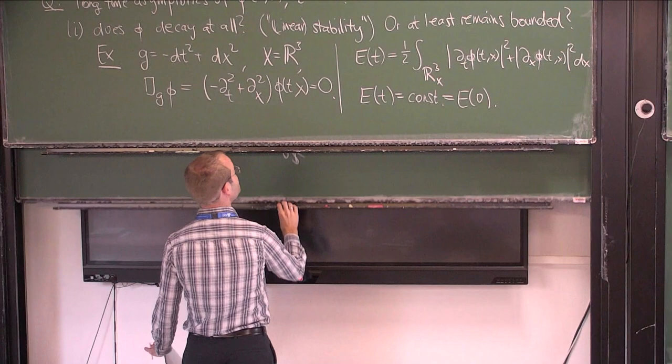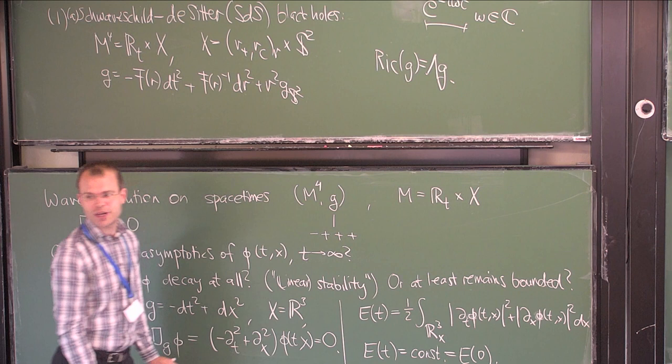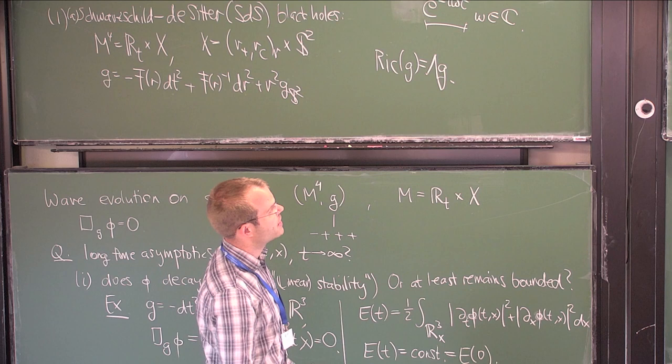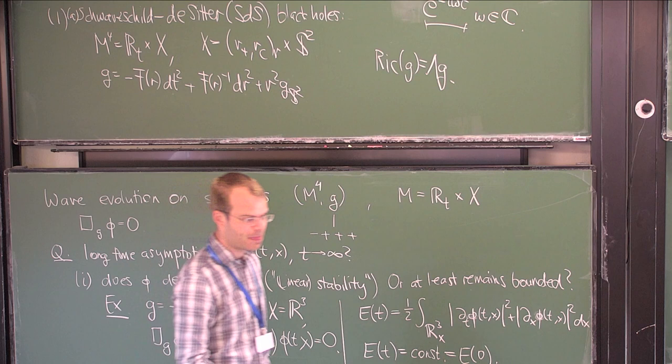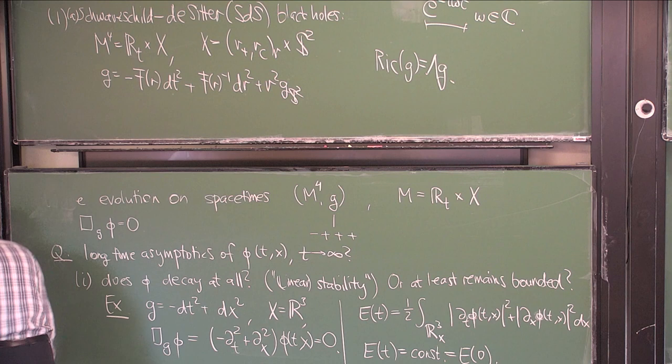That's a bit of the geometry, and now we have the stage set to understand waves evolving on this baseline. At this point, are there any questions? The usual Schwarzschild corresponds to R_C going to infinity — that's right, you formally set λ = 0 and then you get the Schwarzschild metric. That will actually play an important role.